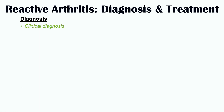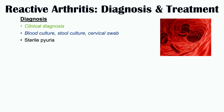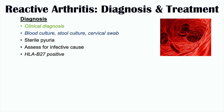Diagnosis of reactive arthritis is primarily a clinical diagnosis made by history and physical examination. Blood culture, stool culture, and cervical swab can be helpful in identifying an associated infection. Sterile pyuria — pus (white blood cells) in the urine without bacteria — may also be found. These cultures help assess for an infective cause, and in some cases HLA-B27 testing can be performed, given its strong association with reactive arthritis.